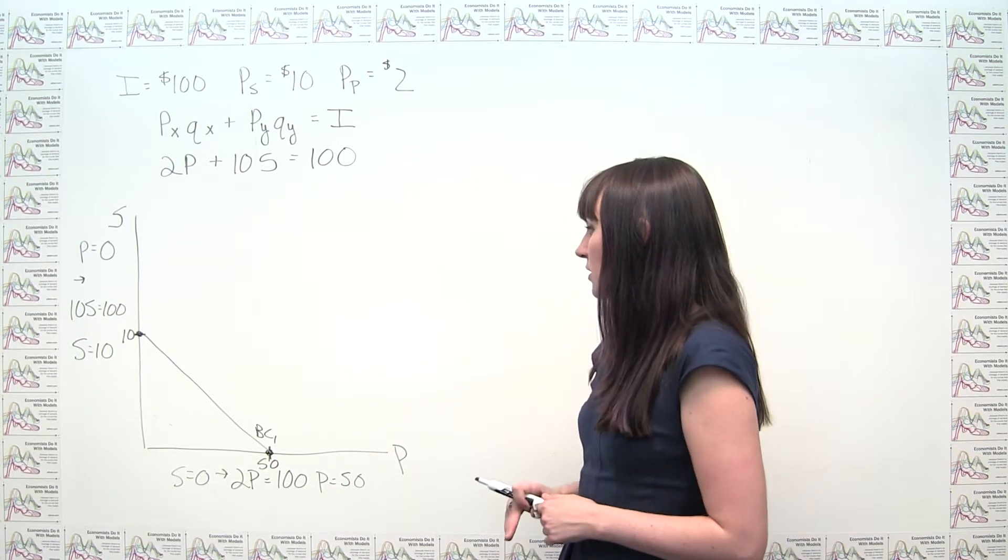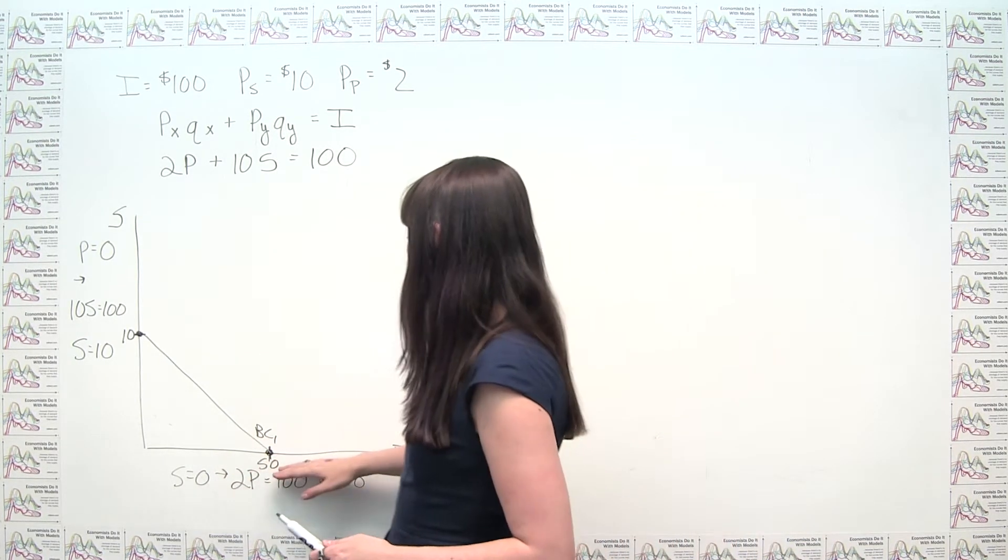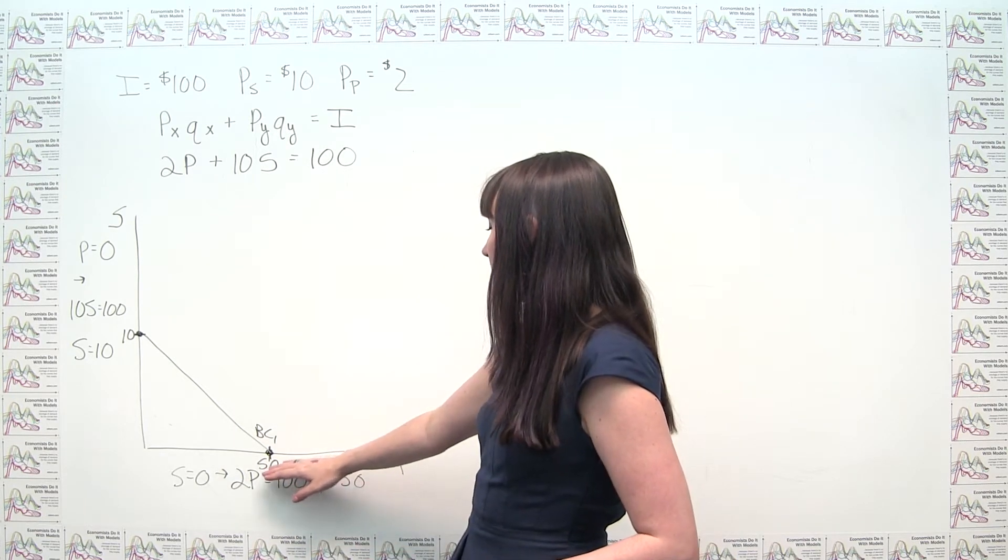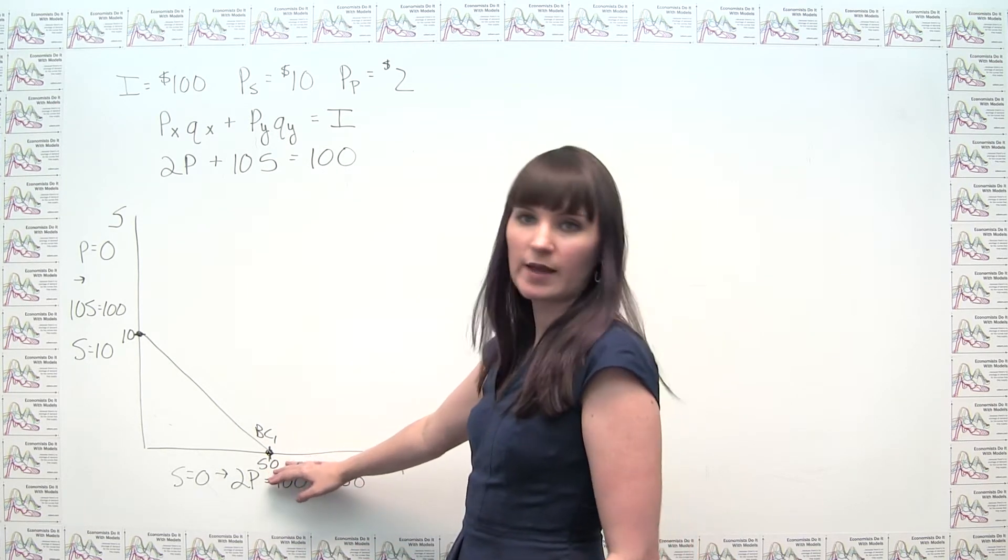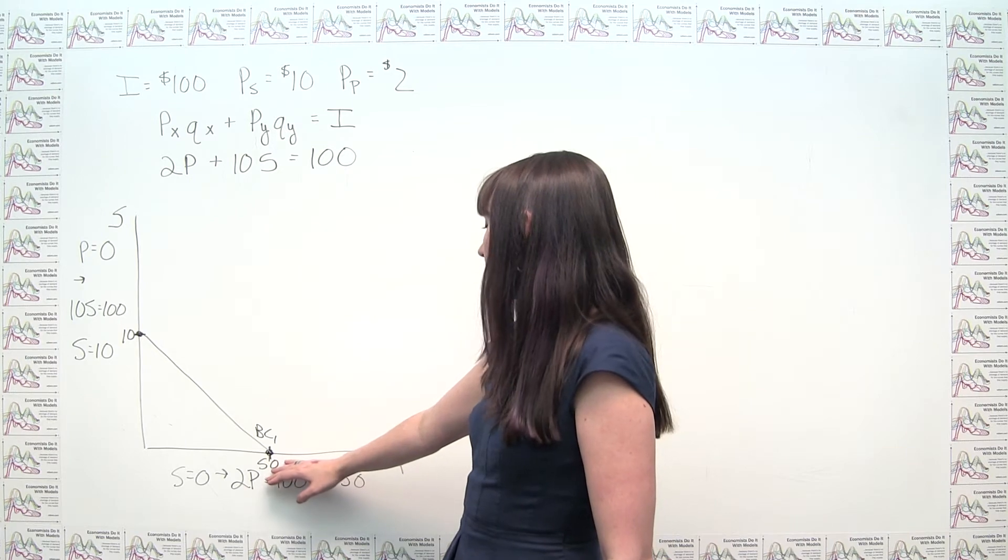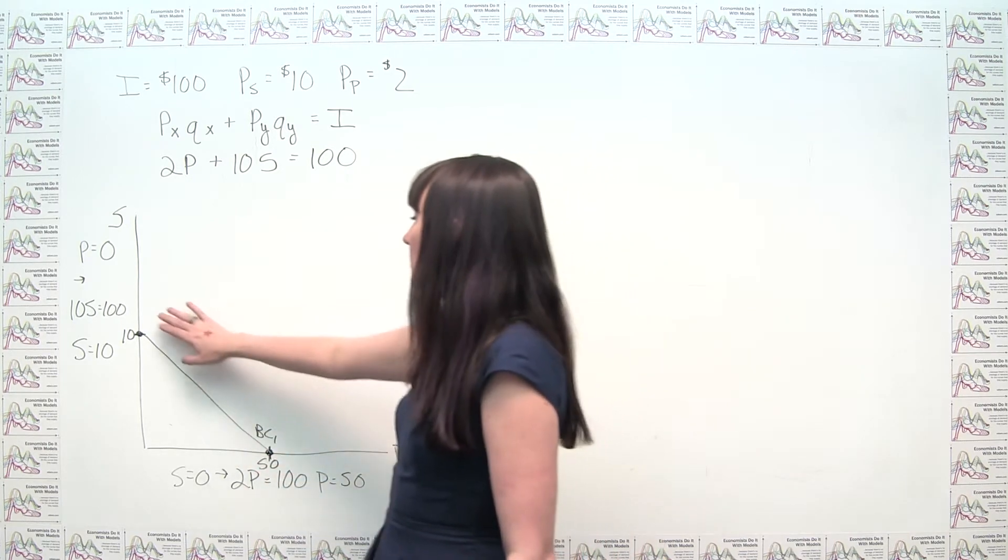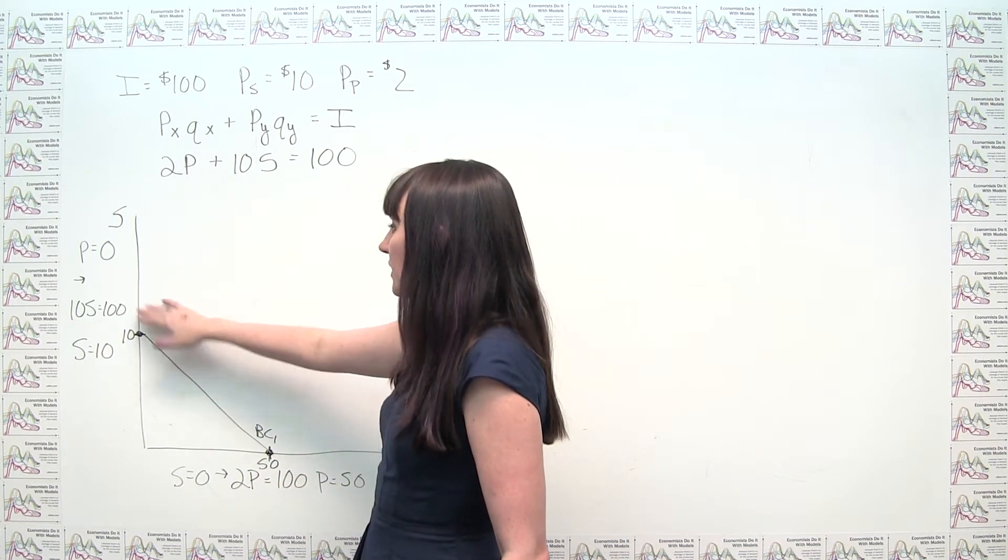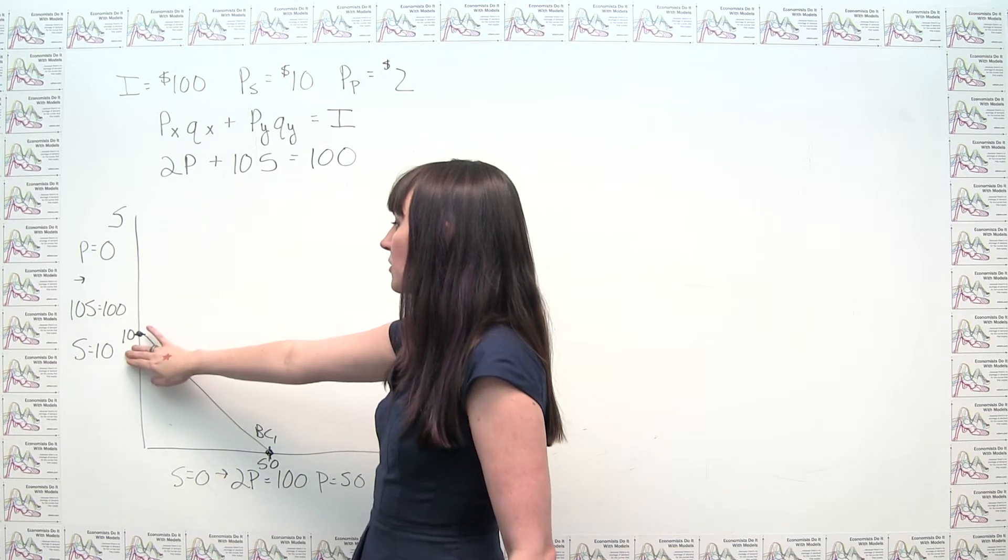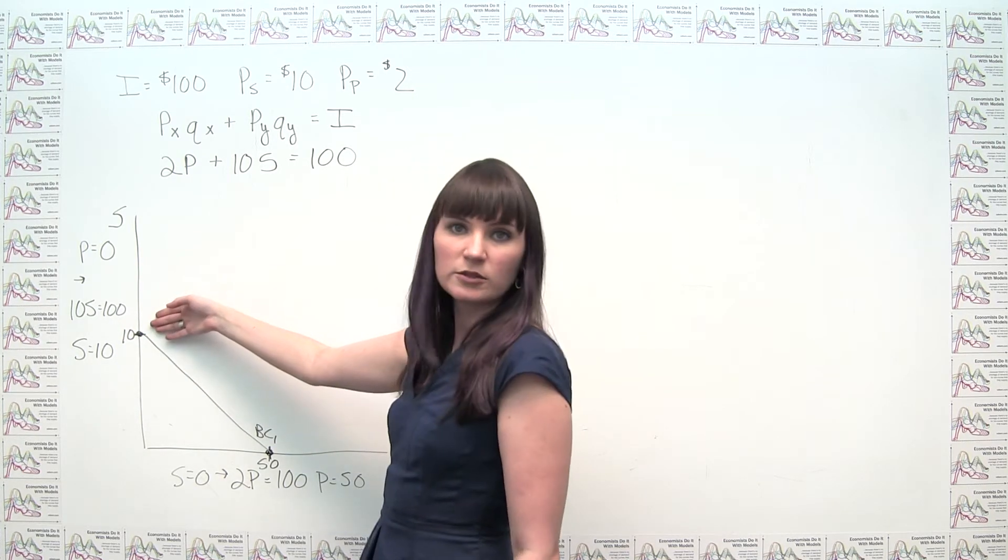So that wasn't too bad. And you'll also notice that our intercept here is just our income divided by the price of the good on the x-axis, so 100 divided by 2. And our intercept here is again just our income divided by the price of the good on the y-axis, this time 100 divided by 10.